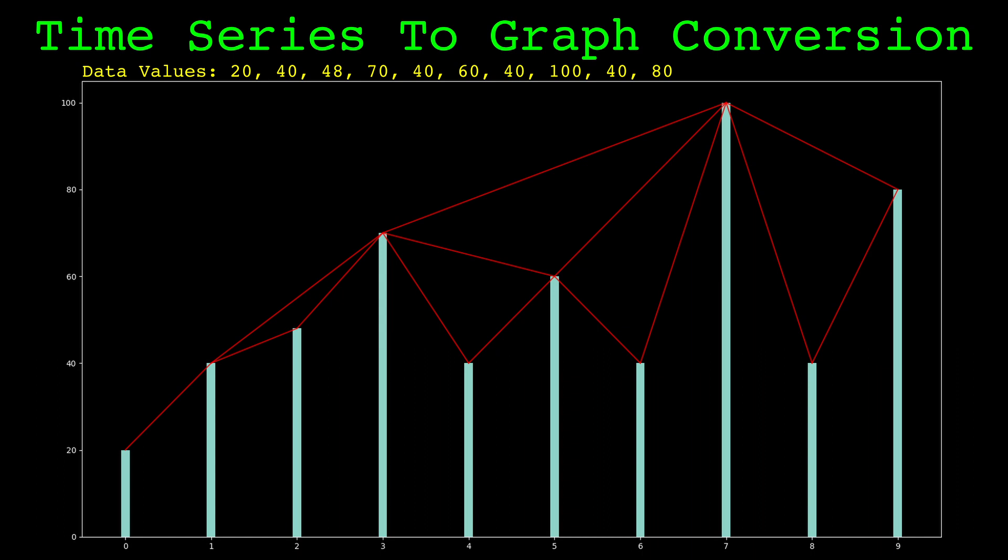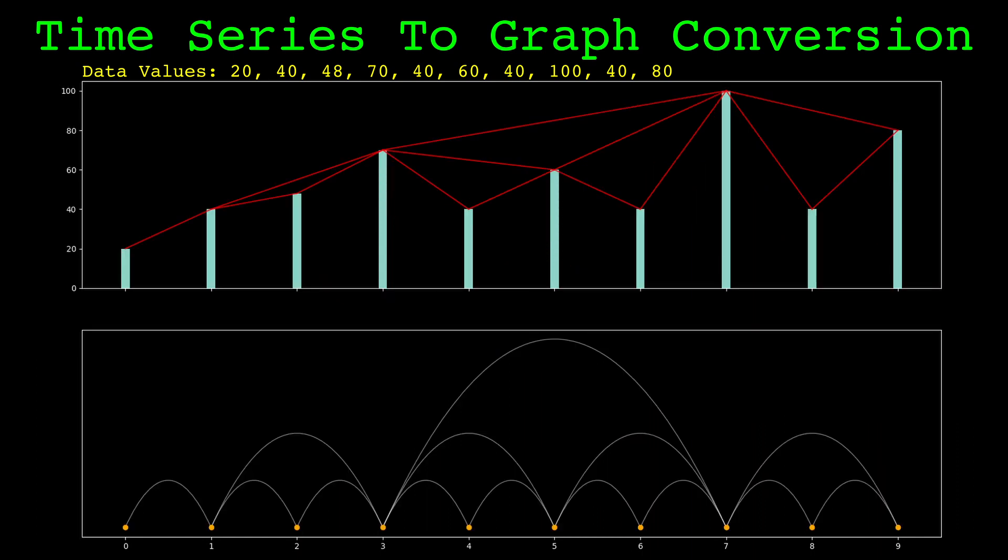Let's look at the visibility graph now. The orange dots are the nodes, one for each value in the time series. There is a link between each pair of nodes that have an uninterrupted line of sight between them.